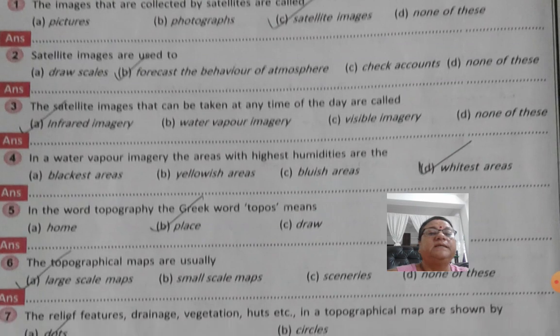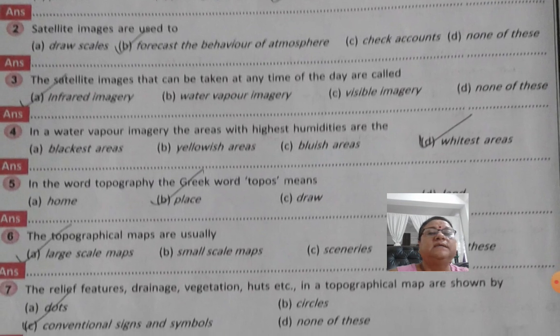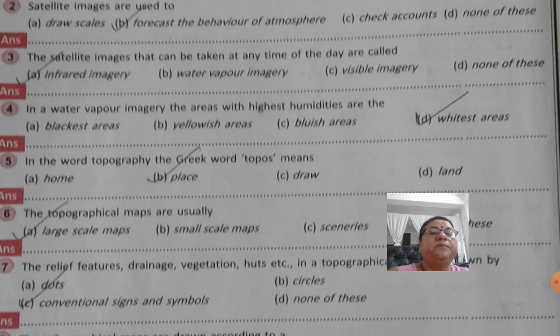The satellite images that can be taken at any time of the day are called infrared imagery. In a water vapor imagery, the areas with the highest humidity are the white area.